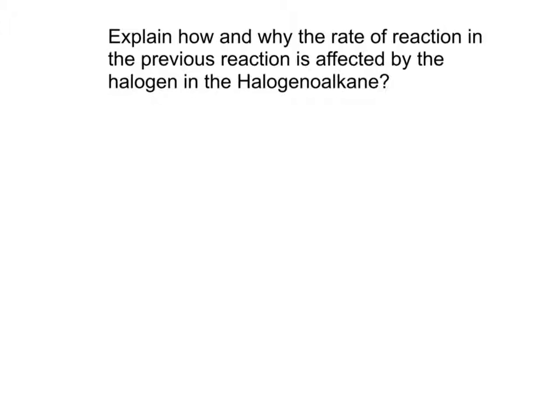As I go down the group, so as I go down group seven, my halogens get bigger. That means that my carbon halogen bond must get longer. And as it gets longer, it gets weaker. And therefore the rate of reaction increases.